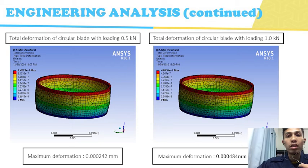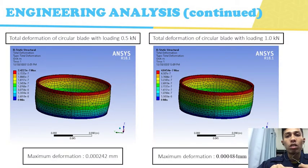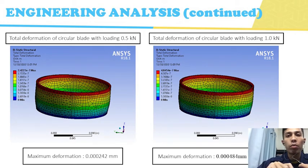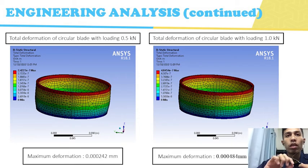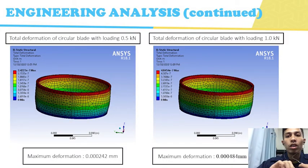We also conducted an analysis to determine how our circular blade will deform when force is applied. We applied two forces: 0.5 kN and 1.0 kN. When 0.5 kN is applied, the maximum deformation is 0.000242 mm. When 1.0 kN is applied, the total maximum deformation is 0.000484 mm. That's all for me. Thank you for listening to my presentation.